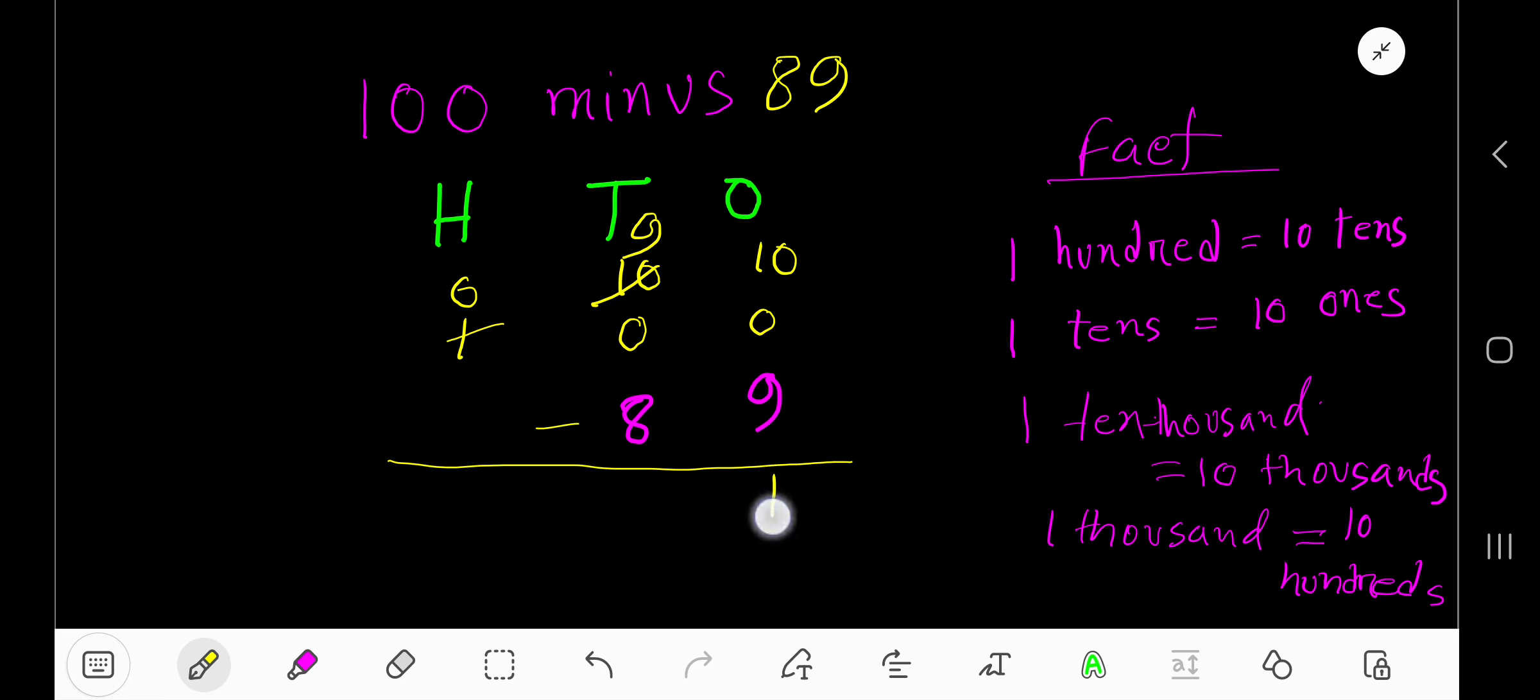10 minus 9 is 1. 9 minus 8 is 1. This 0 on the left-hand side doesn't carry any value, so your answer is 11.